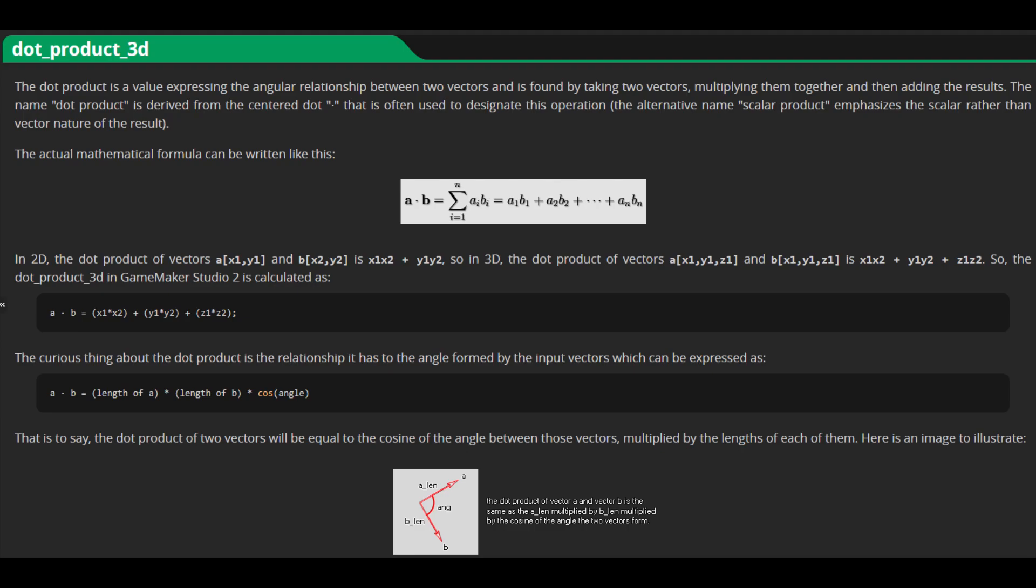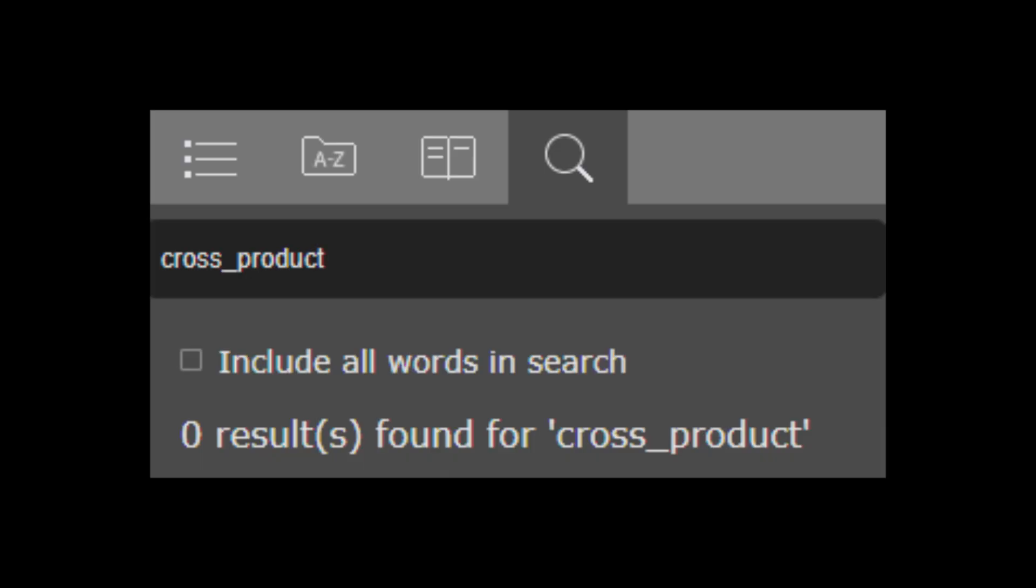For practical purposes, it is probably important to note that while GameMaker Studio 2 has built-in functions to calculate the dot product, it does not have built-in functions to calculate the cross product, at least at the time of my recording this. And consequently, if you want to calculate such a thing, you're going to have to implement it yourself.